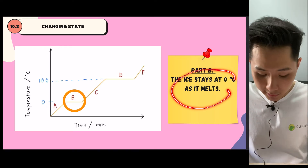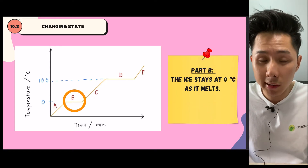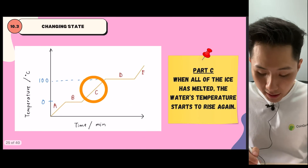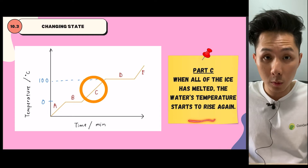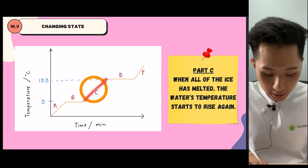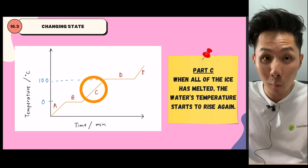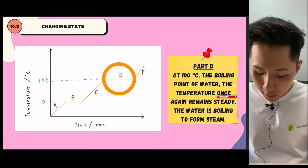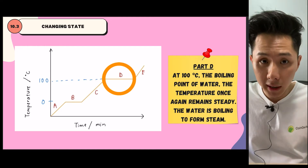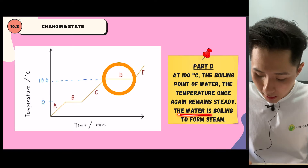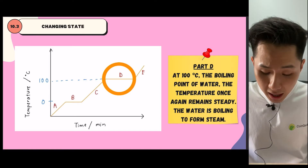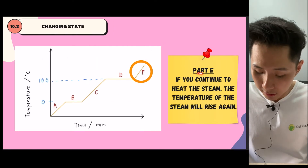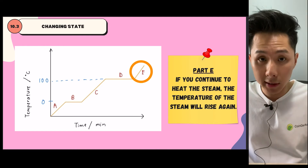At zero degrees Celsius, you can see that the increase in temperature takes a pause. The ice stays at zero degrees Celsius as it melts. Once it has completely melted, the water temperature starts to rise again, all the way to 100 degrees Celsius. At 100 degrees Celsius — the boiling point of water — the temperature once again remains steady. This is the phase in which liquid is starting to change to gas, and the water is boiling to form steam. If you continue to heat up the steam, the temperature of the steam will rise again.